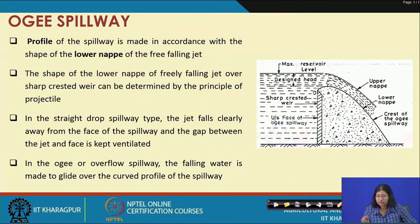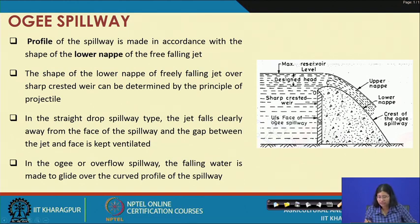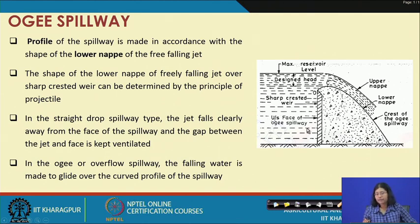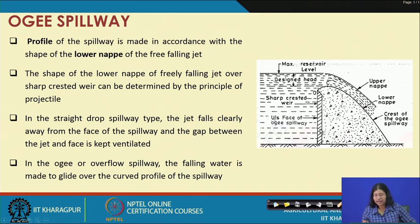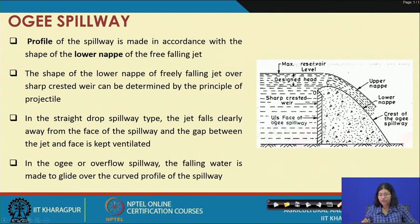In the Ogee or overflow spillway, the falling water is made to glide over this curved profile of the spillway. This is the kind of structure the Ogee Spillway has, and this part is the upstream face of the Ogee Spillway. Depending upon the structure, this may be vertical or it may have some angle.